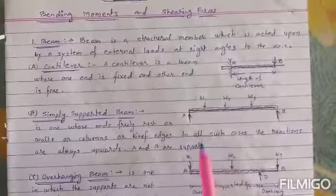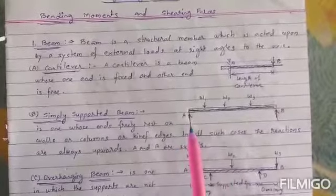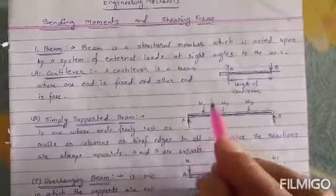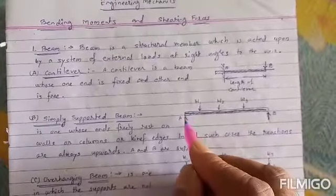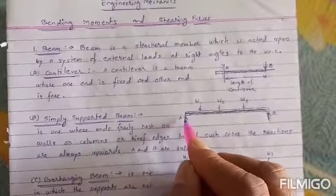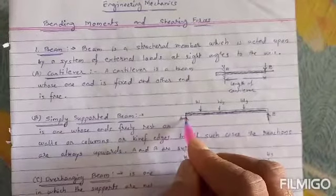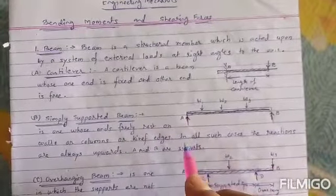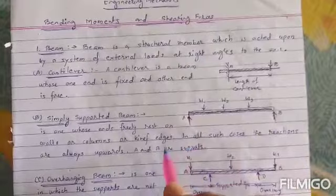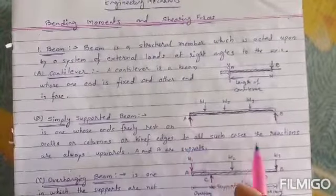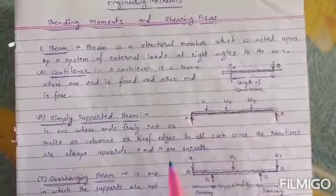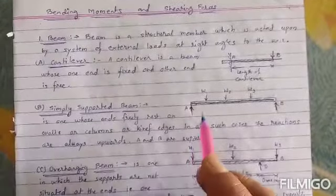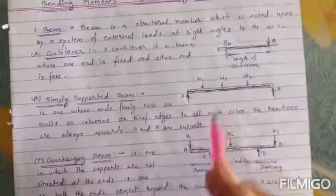Here is the wall, column, or knife edge. In all such cases, the reactions are always upward. A and B are the supports, and the load on the structure acts vertically downward.